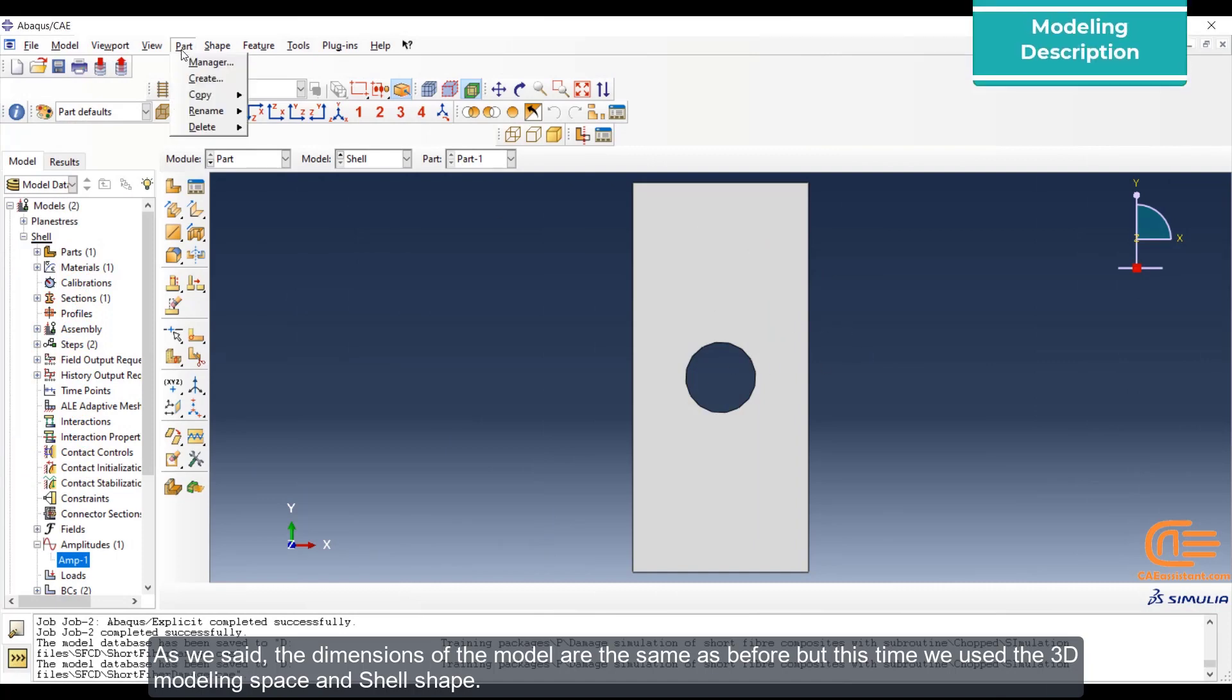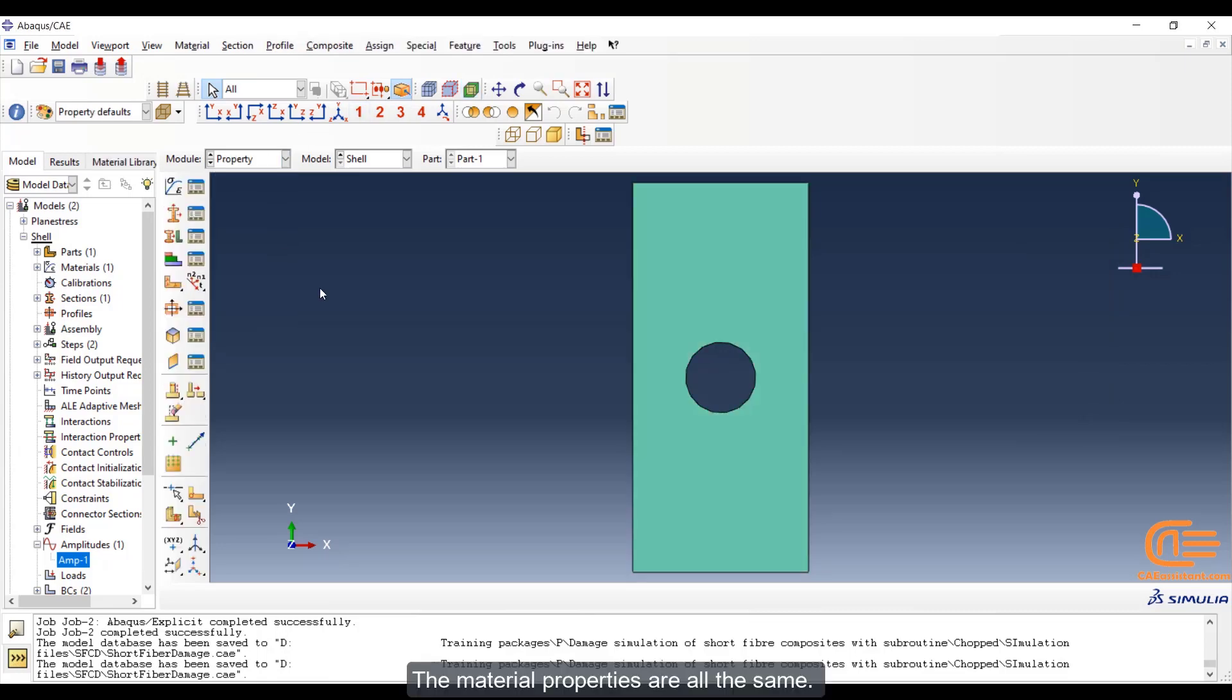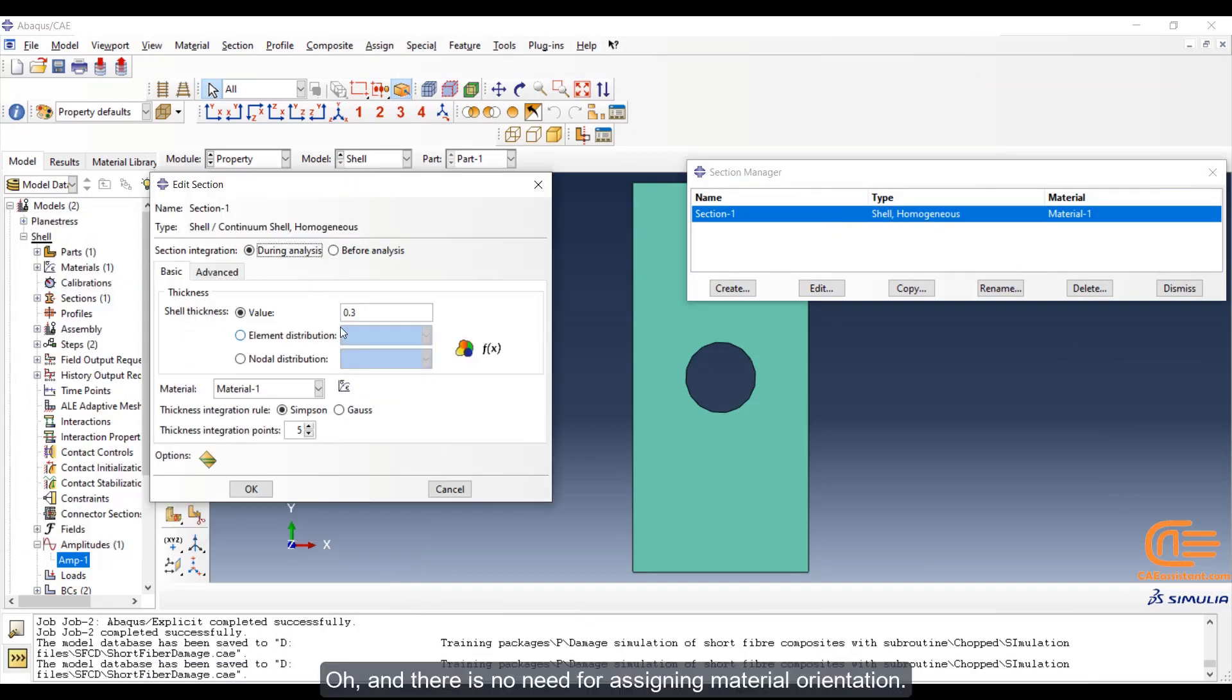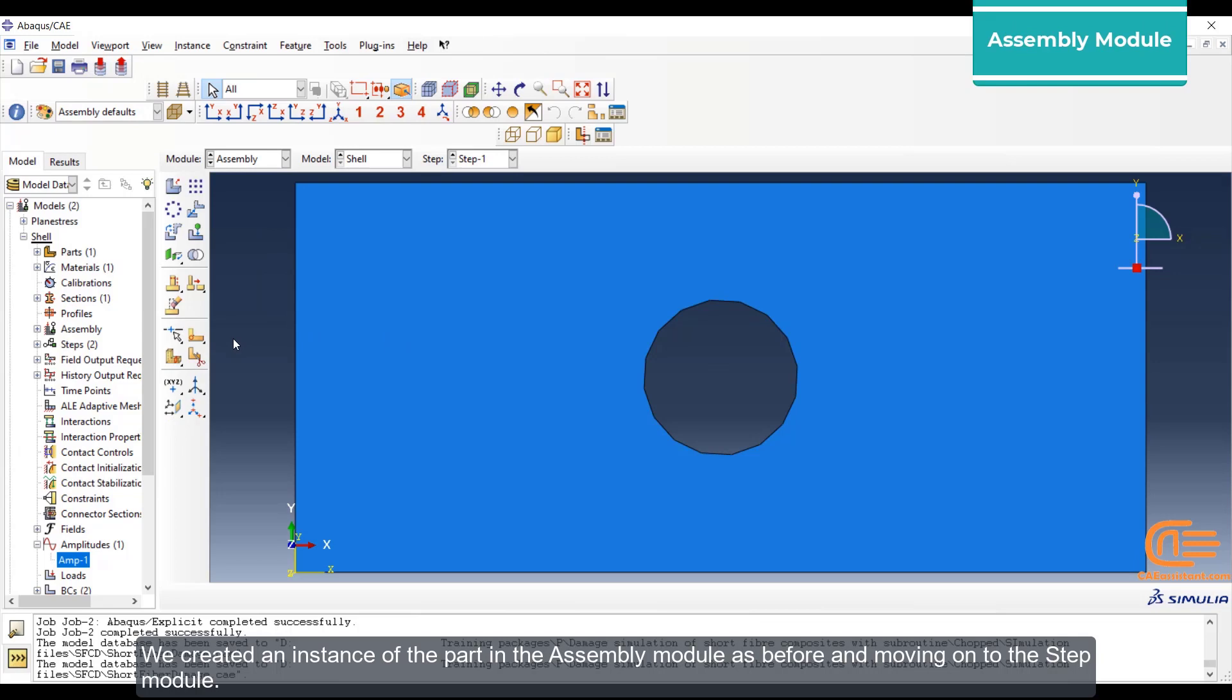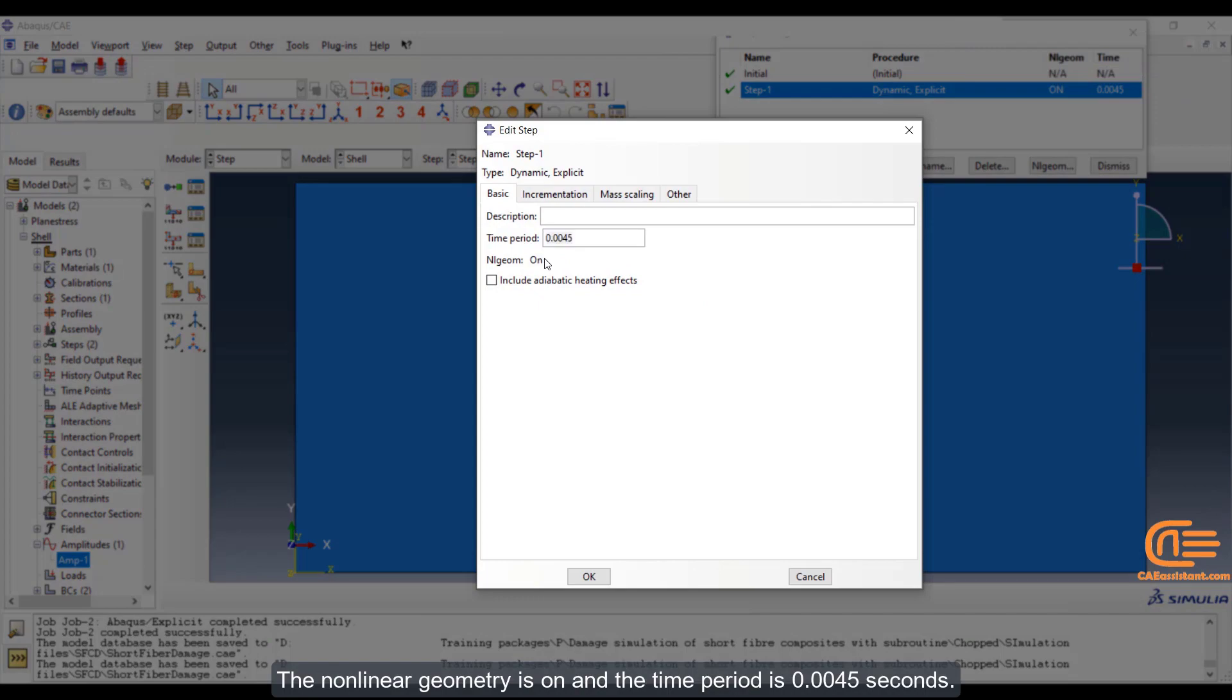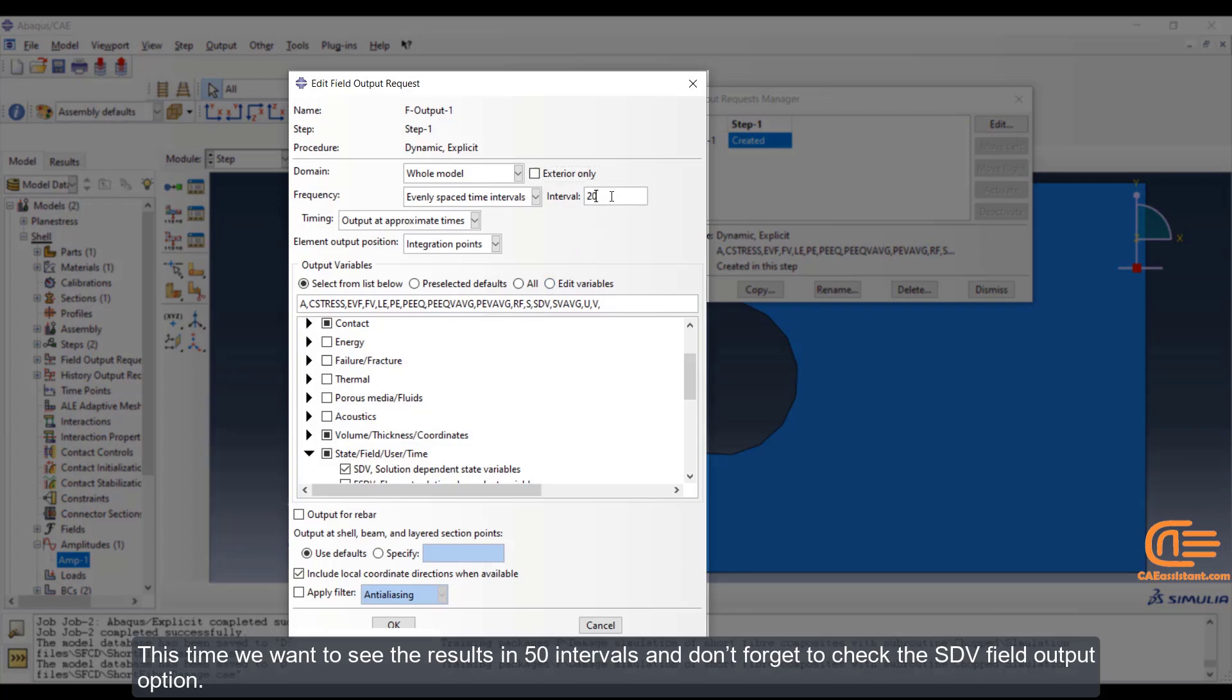As we said, the dimensions of the model are the same as before, but this time we used the 3D modeling space and shell shape. Move on to the property module. The material properties are all the same. However, this time we created a shell section and assign it to the model, as you see here. And there is no need for assigning material orientation. We created an instance of the part in the assembly module as before and move on to the step module. A dynamic explicit step was created for this model. The nonlinear geometry is on and the time period is 0.0045 seconds. This time we want to see the results in 50 intervals and don't forget to check the SDV field output option.